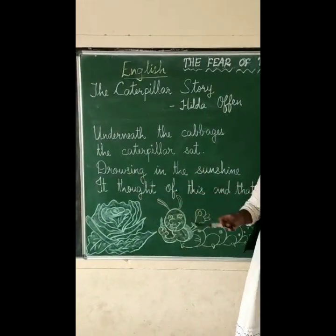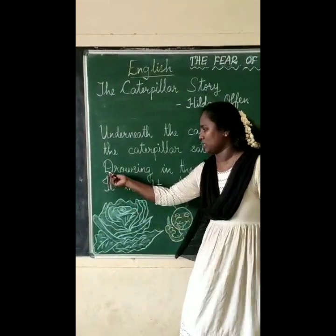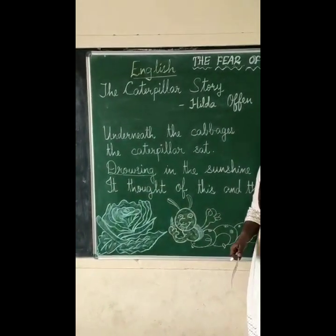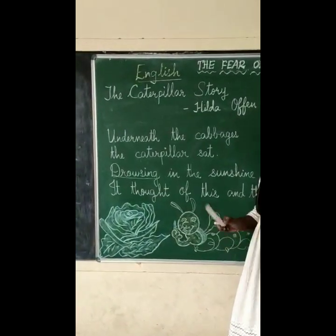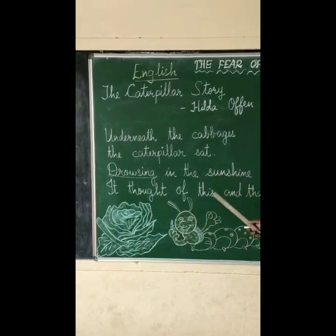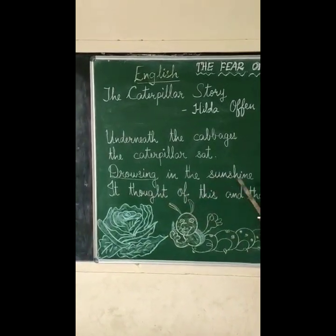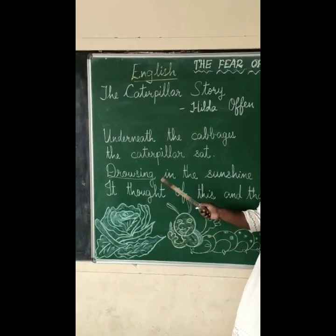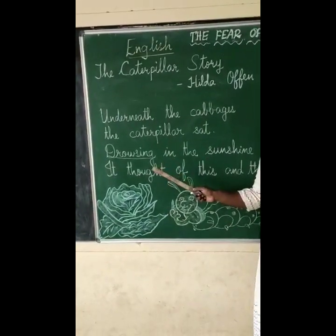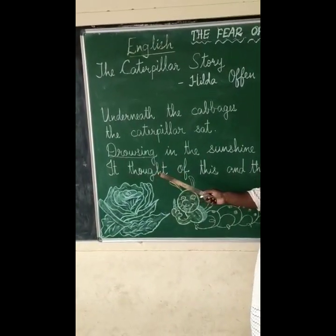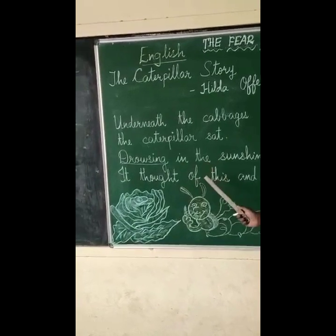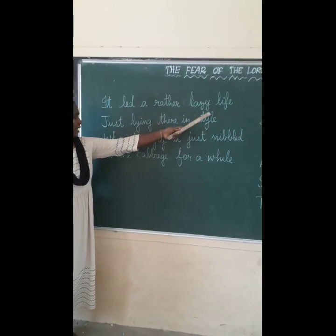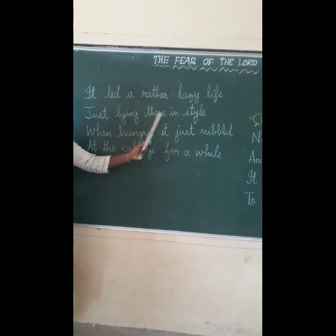Drowsing means what? Drowsing means it feels sleepy and very tired because of the sunshine. It thought of this and that. In the sunshine, the caterpillar becomes very tired and thinking of this and that. It led a rather lazy life, just lying there.